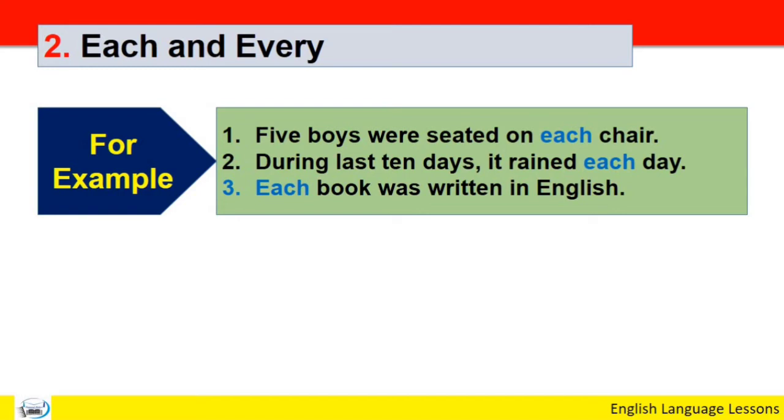ابھی ہم example کے through ان کو سمجھیں گے. تو سب سے پہلے each کے example آپ کے سامنے ہیں. Five boys were seated on each chair. Number two: during last ten days it rained each day. Number three: each book was written in English. یہاں پہ آپ دیکھیں.